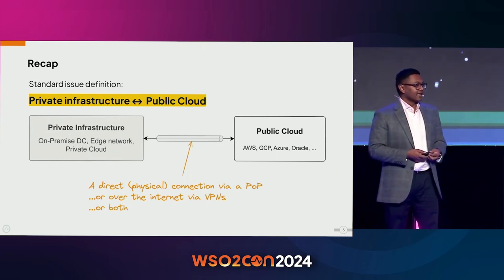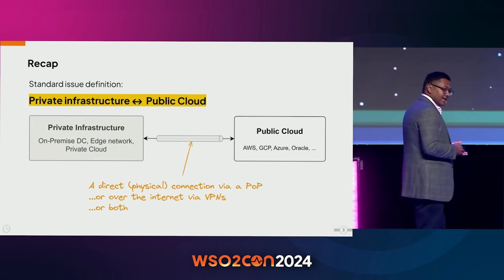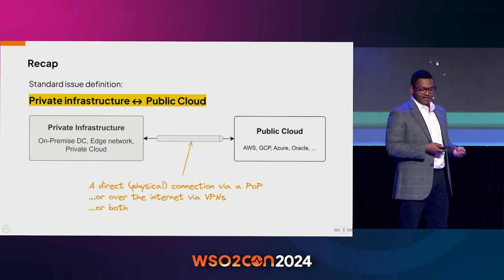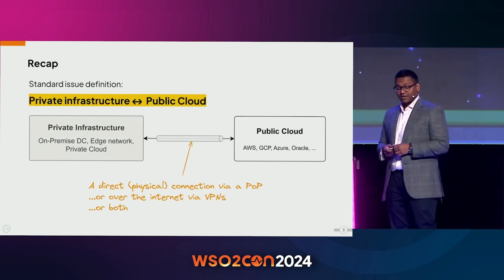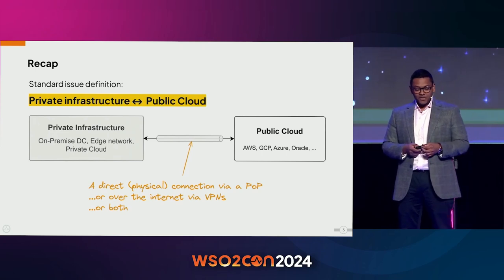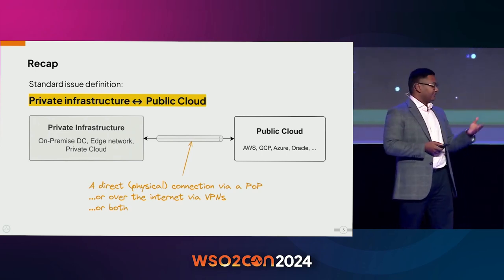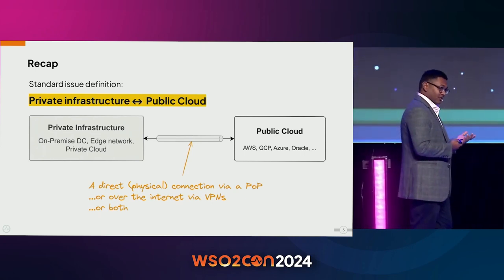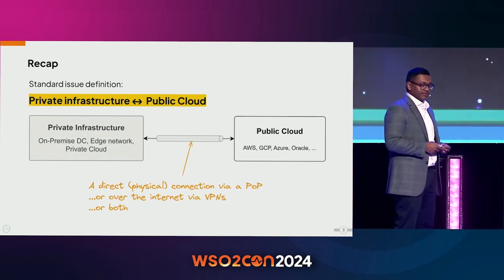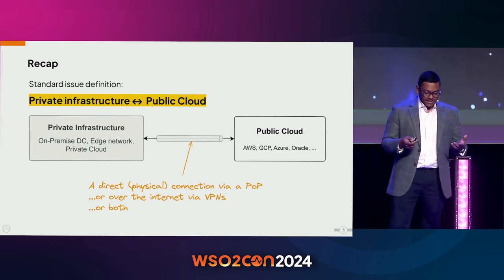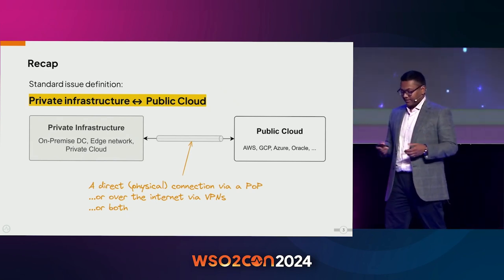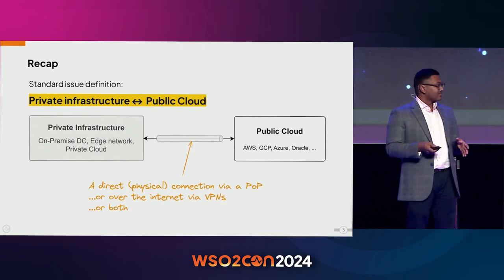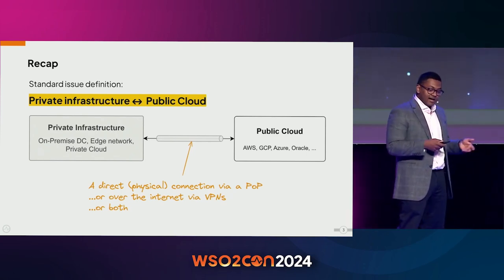If you're not okay with going over the internet through a VPN, you'd use direct physical connections between your private infrastructure and the public cloud provider's network. It's not as easy as plugging wires from your server rack into a data center — you need to connect to a Point of Presence (POP) and go through a partner. It costs more, but you get lower latency and more bandwidth.